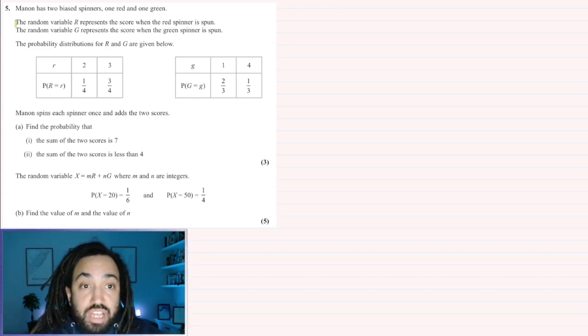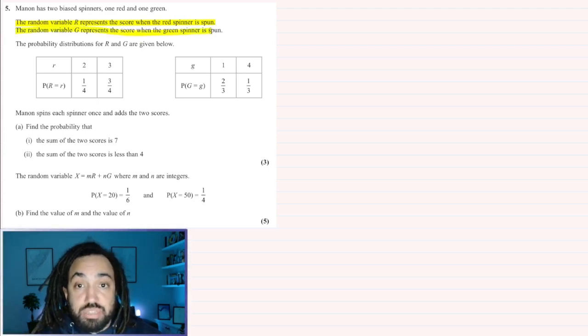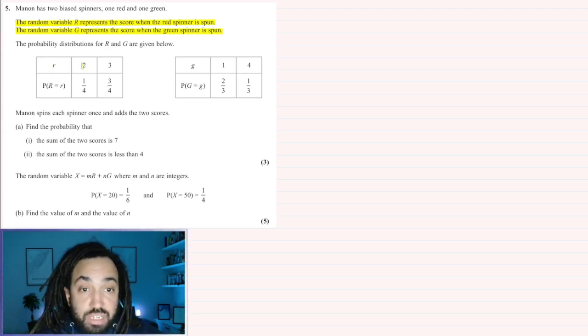The random variable R represents the score when the red spinner is spun, and the random variable G represents the score when the green spinner is spun. So for the red spinner, there are two possible outcomes, 2 and 3. The chance of getting a 2 is a quarter and the chance of getting a 3 is three quarters.